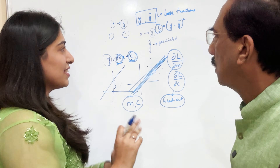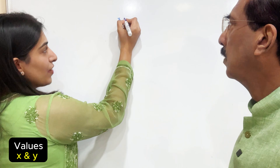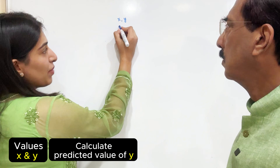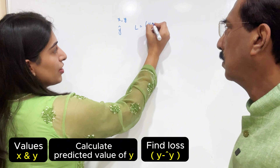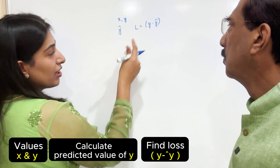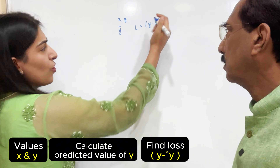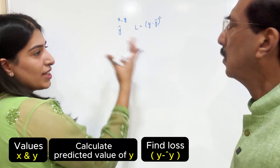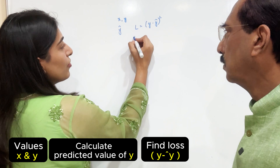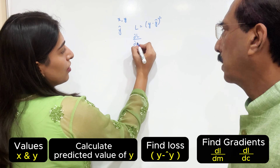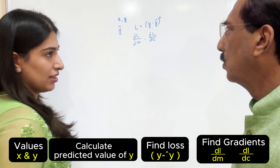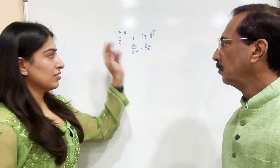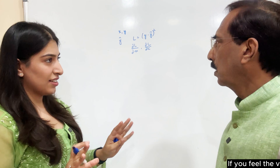This is completely clear — 100%. Let me quickly recap: so far we understood that we have the values of X and Y; we calculate the predicted value of Y; we find the loss — which is some difference between Y and Y-predicted, the actual minus predicted, or the square of it. There can be many different ways of calculating the loss. Then we find the gradients — DL/DM or DL/DC.